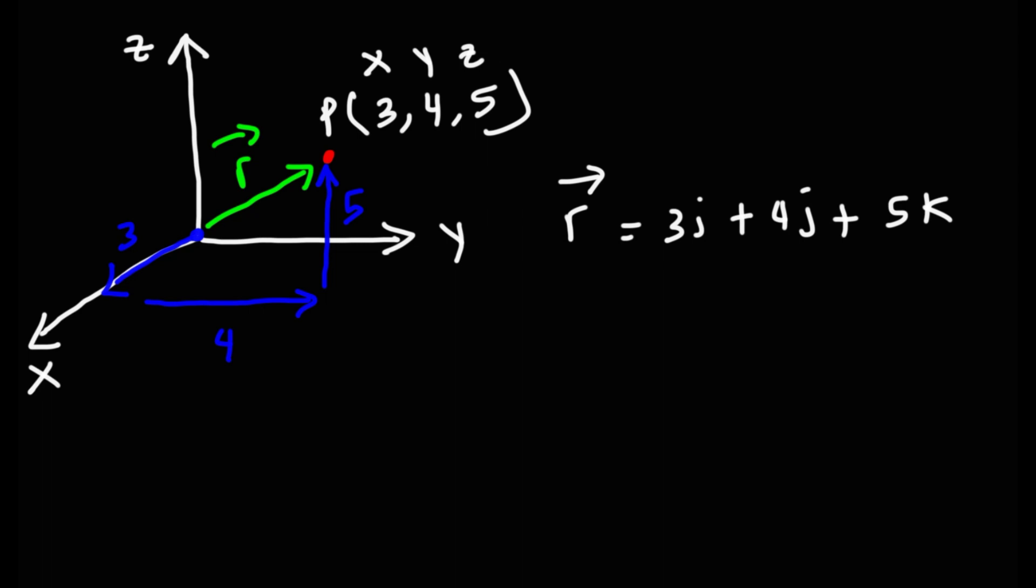Now here's a question for you. How can we determine the length of the position vector r? How long is this position vector? In order to determine the length of the position vector, you're basically finding the magnitude.